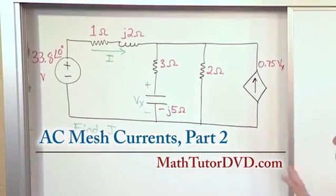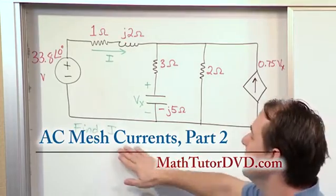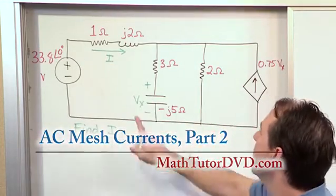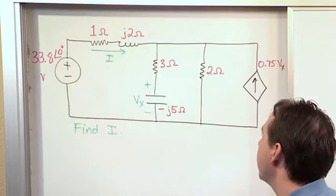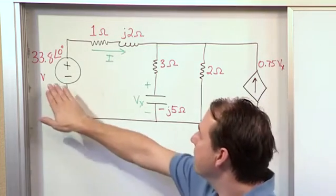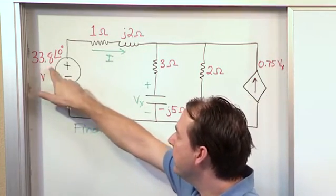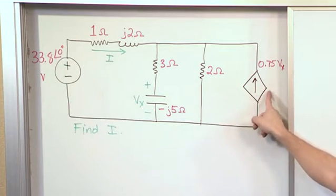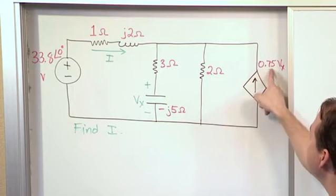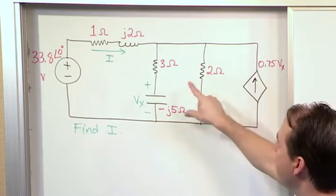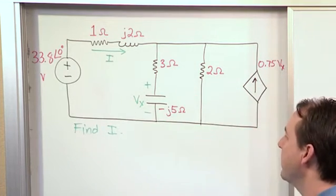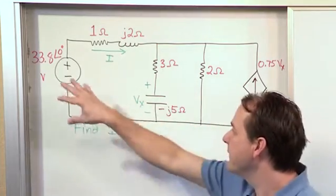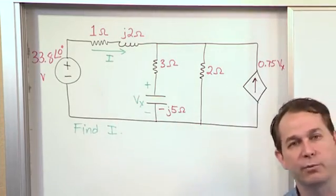Here we have this mesh current problem. We want to solve it with mesh currents and the problem simply states find the current I, which is this current labeled as it's drawn in the reference direction like that. Now we have a regular voltage source over here, 33.8 volts at an angle of zero degrees. We also have a dependent current source. The value of this current is going to be 0.75 times vx, where vx is defined to be the voltage across the capacitor, again oriented as it is shown on the board.